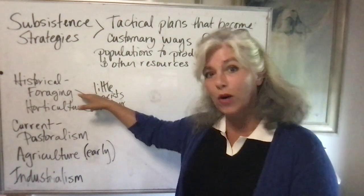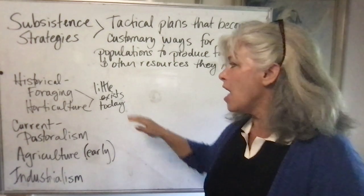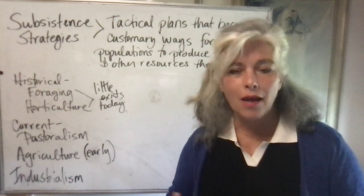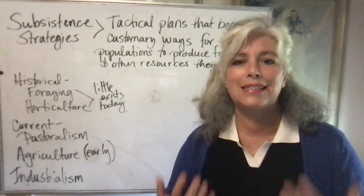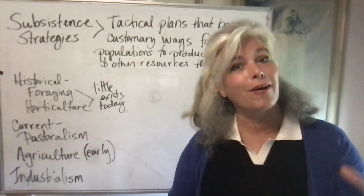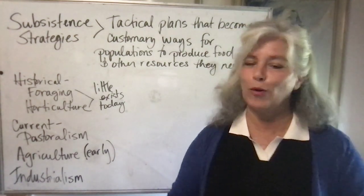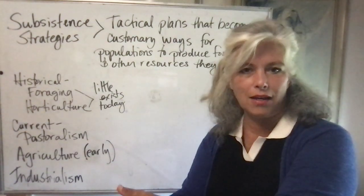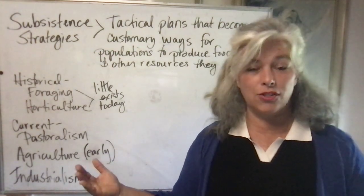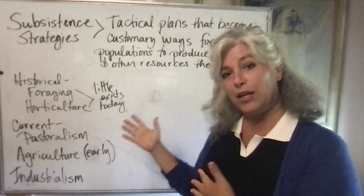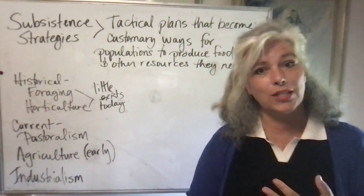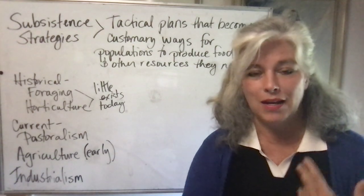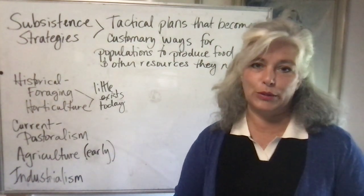Foraging populations are intentionally kept low because the more people you have, the more resources you need, and nature only produces so many resources without manipulation. The idea of manipulating the environment doesn't arise because that's not the cultural way — it's seen as something you should not do because it is against nature. That's why stage one of the demographic transition can represent about 40,000 years of history. A little bit of foraging still exists today in small-scale societies around the world.